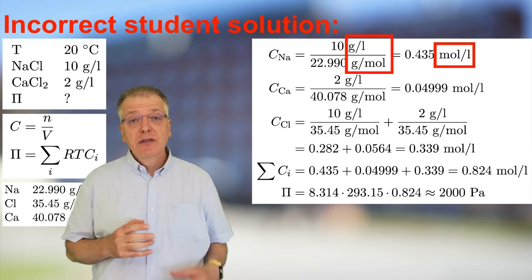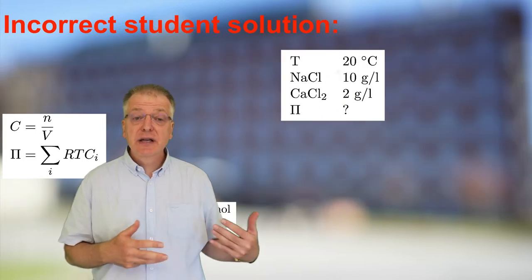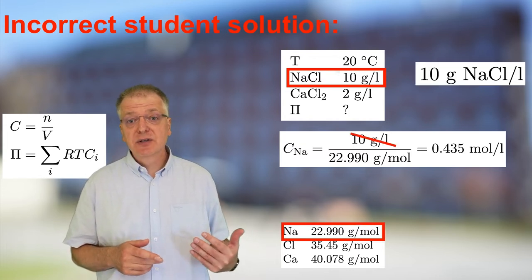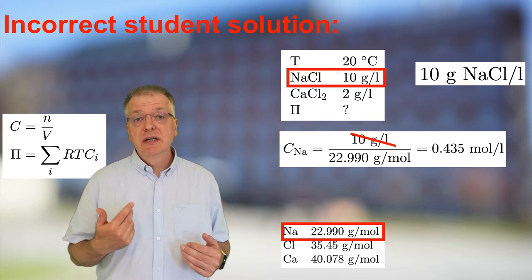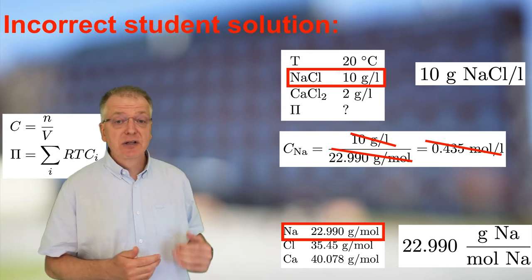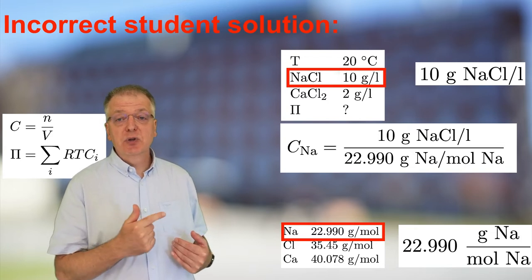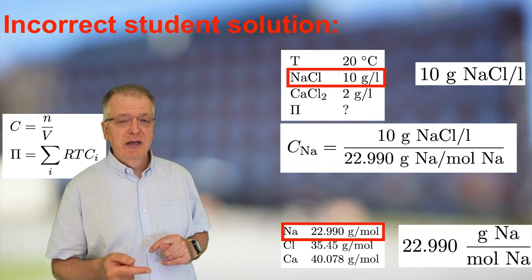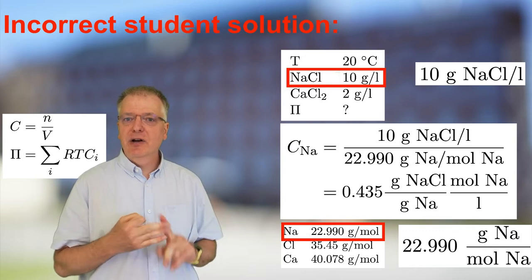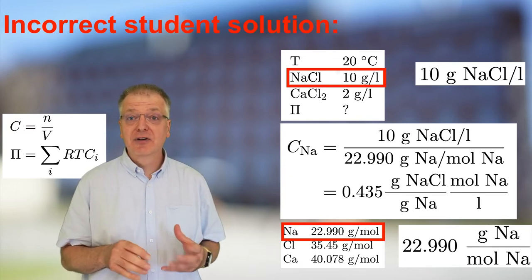Looking at the units we have used, the concentrations seem to be correctly calculated, but not if we think carefully about what they are units of. The 10 gram in the task is not just any 10 gram — it is 10 gram of sodium chloride. The molar weight 22.990 gram per mole is not just any random molar weight; it is 22.990 gram sodium per mole sodium. So if we expand on the first calculation using these more specific units, we get 10 gram of sodium chloride per liter divided by 22.990 gram of sodium per mole sodium, giving 0.435 with units of mole of sodium times gram of sodium chloride per gram of sodium per liter, which clearly is different from the unit we would like — mole sodium per liter.